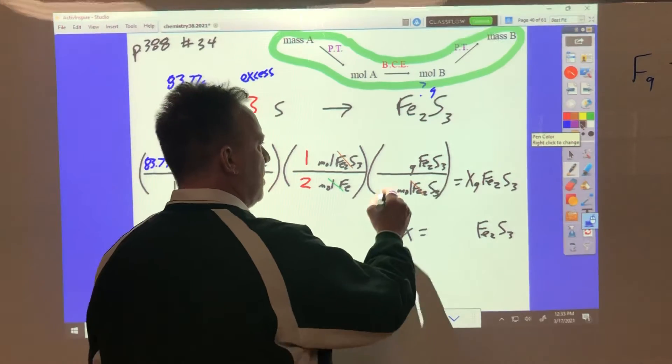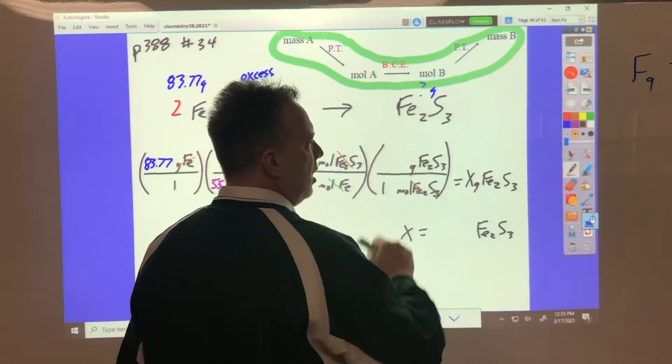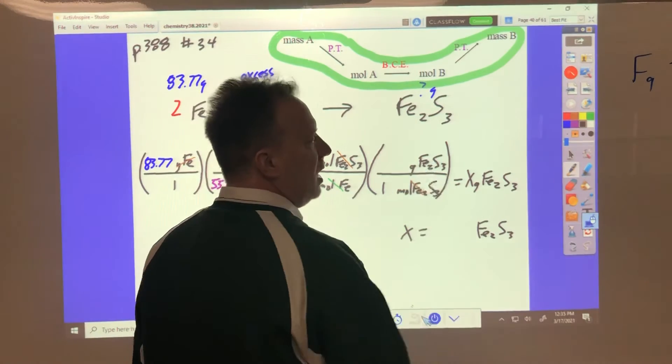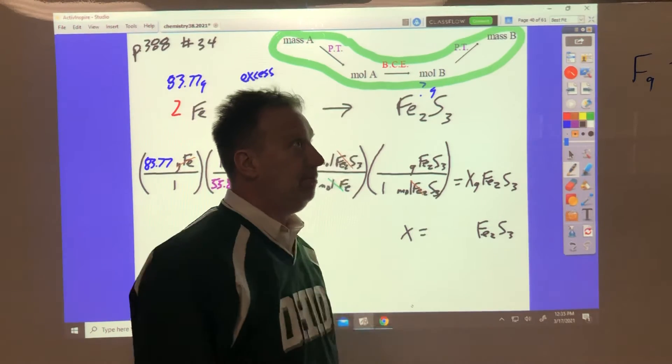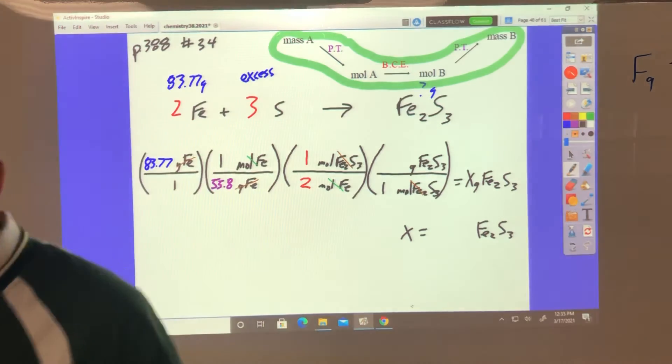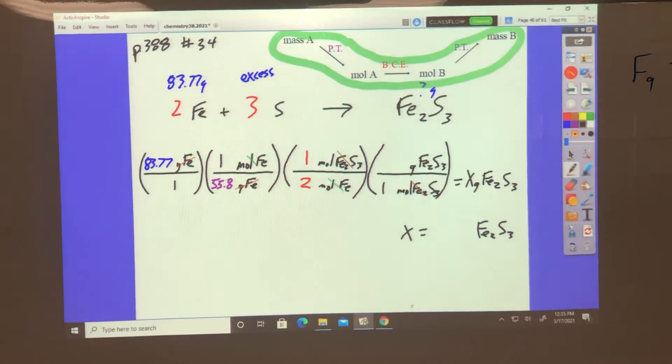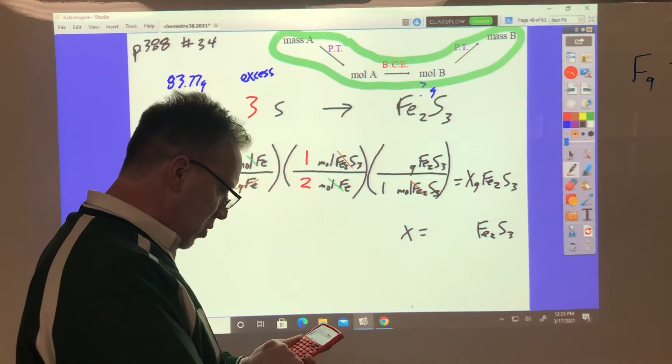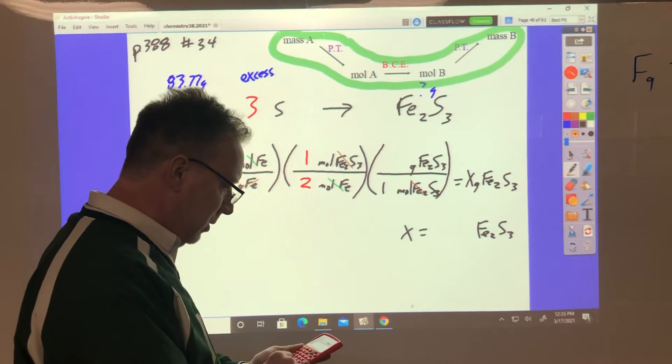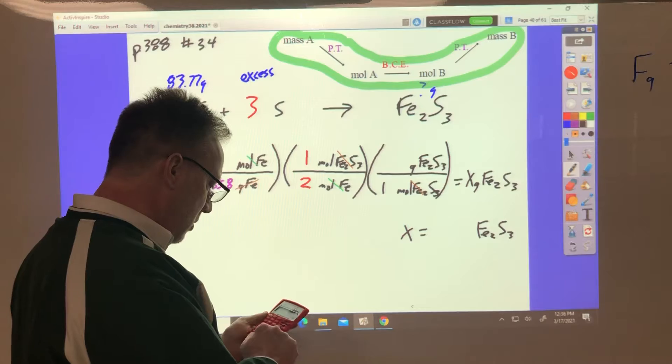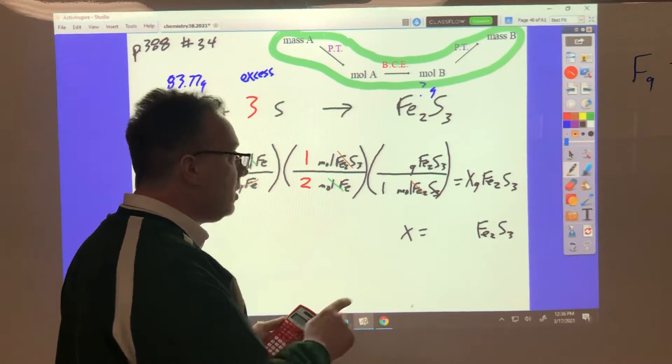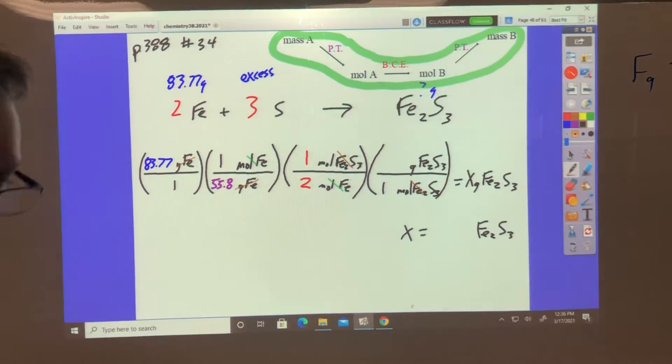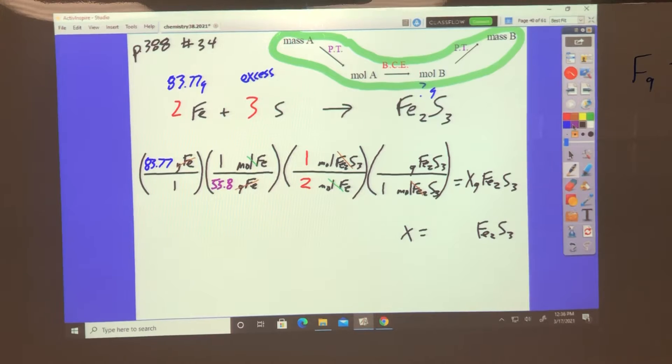And the last one comes from the periodic table. A mole of Fe2S3, how much is its mass? Well sulfur is 32 and iron is 55.8, so 55.8 times 2 equals 111.6 plus 32 plus 32 plus 32 because there's three of those. That's 207.6, a little over 200.